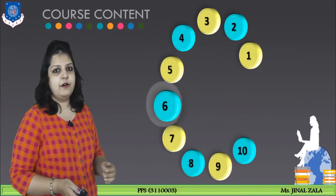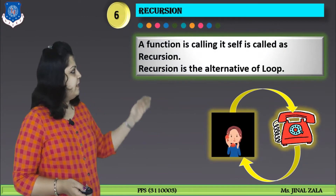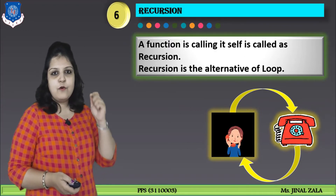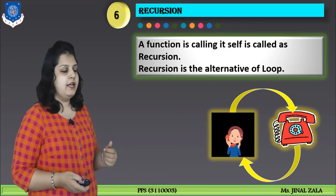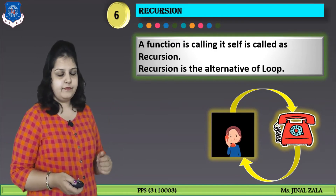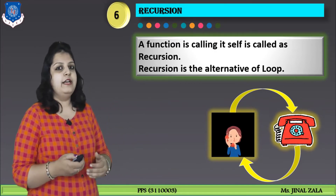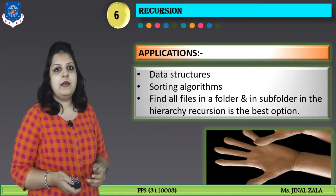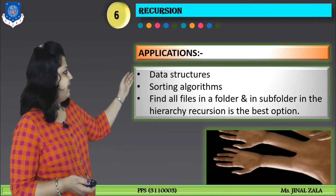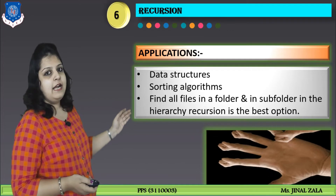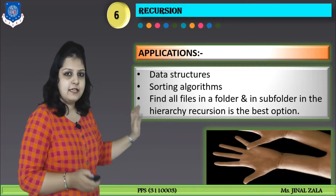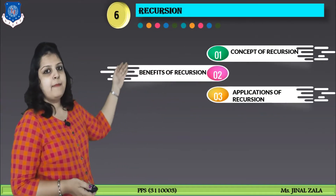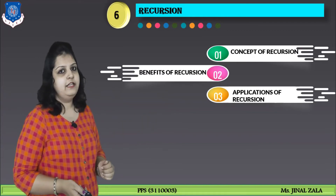Our next module, module number 6, is recursion. What is recursion? A function calling itself is called recursion — meaning if you are calling yourself, that is recursion. Recursion is the alternative of a loop; both loop and recursion are used for repetition. Where can we apply recursion? We can apply recursion in data structures, different sorting algorithms, and finding all files in a folder and its subfolders. We are going to discuss the concept, benefits, and applications of recursion in detail.